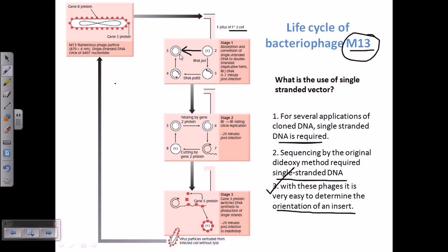After making the double-stranded DNA molecule, this molecule starts the replication process via rolling circle mode. This double-stranded intermediate — which has just been made — is also called the replicative form, or RF form of DNA. The RF form will start replicating via the rolling circle mode of replication, as we can see in the stage 2 picture.